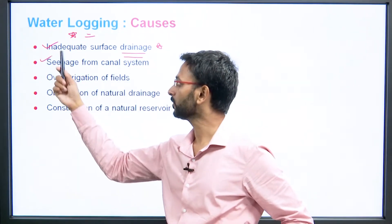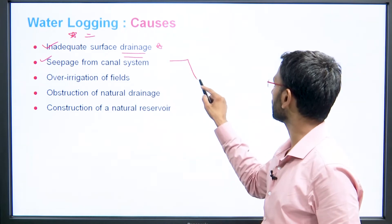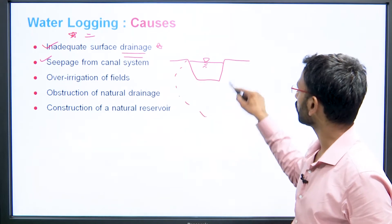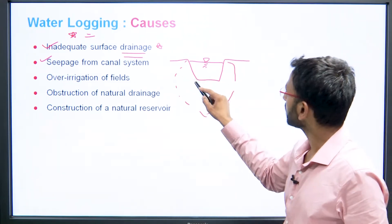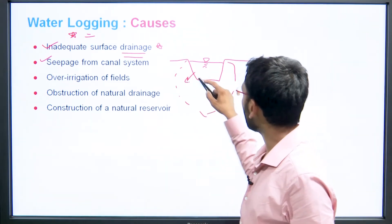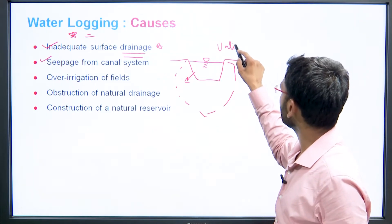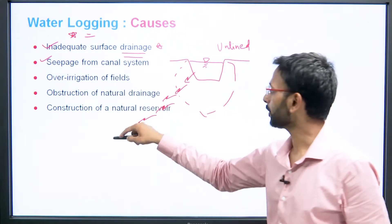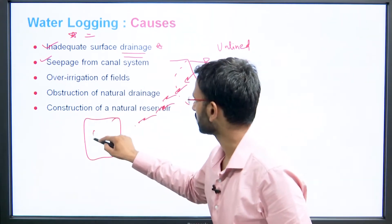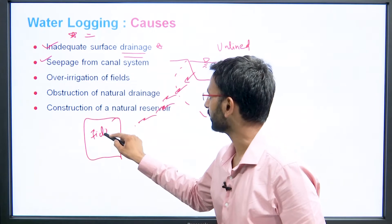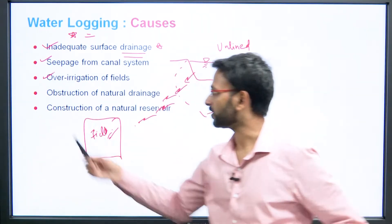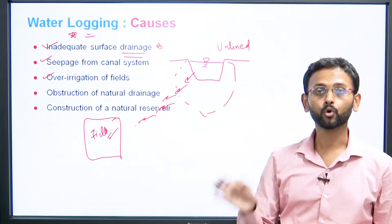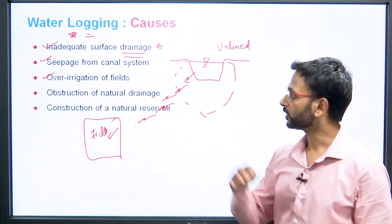Second cause is seepage from the canal system. If this is the cross section of the canal and water is stored here — in an unlined canal with no lining — the water will seep and move on to the surrounding area, affecting nearby fields. Third cause is over-irrigation of the fields. Sometimes we over-irrigate fields, giving more water than required, thinking rain may not come later — but that also leads to a problem.